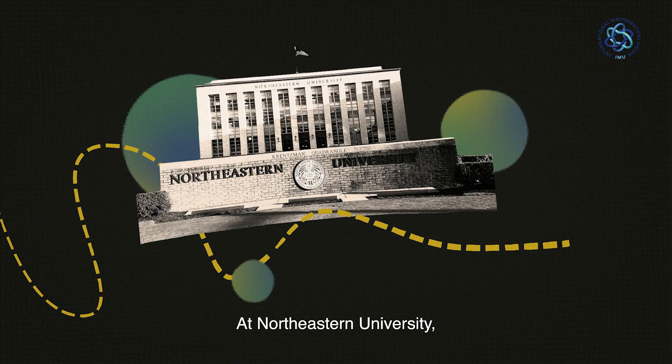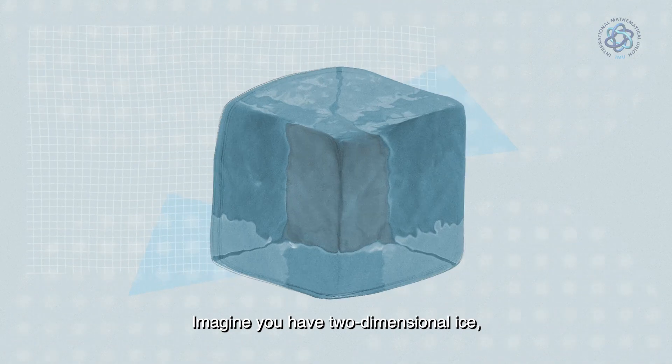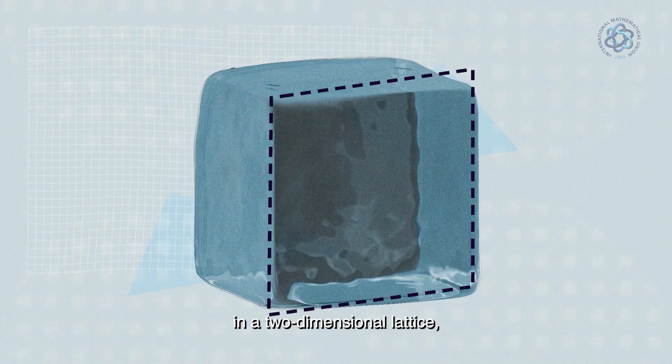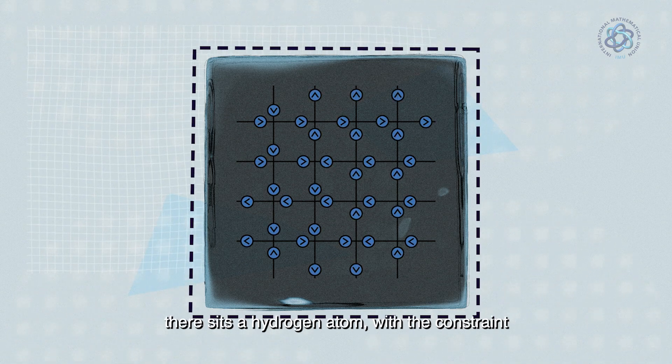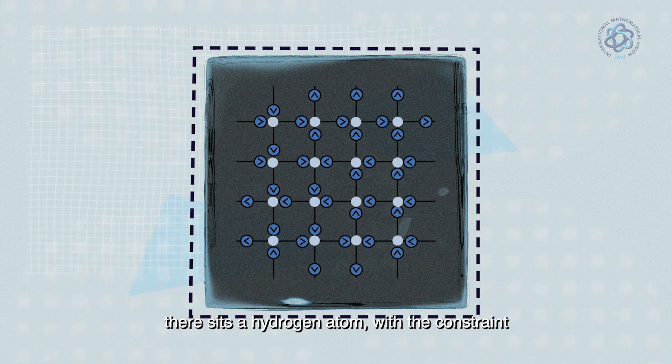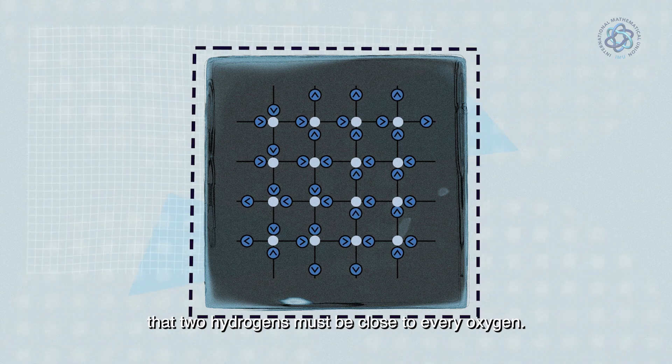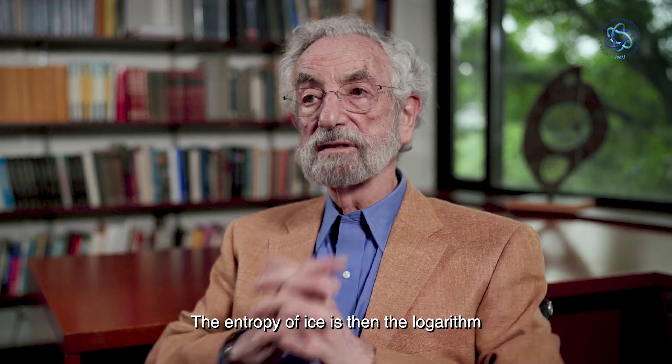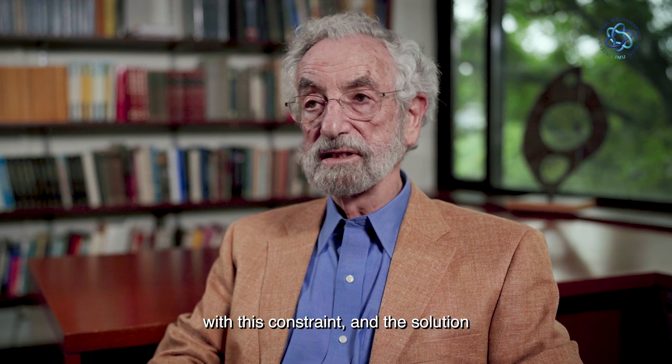At Northeastern University, I managed to solve the problem of the entropy of ice. Imagine you have two-dimensional ice where the oxygens are arranged in a two-dimensional lattice and in between every two oxygens there sits a hydrogen atom with the constraint that two hydrogens must be close to every oxygen.